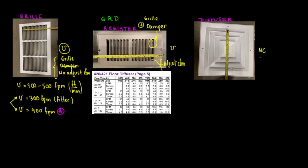For diffusers, the noise criteria depends on the application and the manufacturer. Diffusers are very useful for ceiling tiles and fit well for commercial applications — typically 24x24 or 12x12 sizes. The noise criteria should be below 25 NC, though it can go to 30 or 35 depending on the application, such as hospitals, schools, or restaurants.